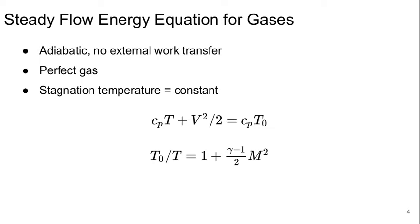So if we start with the energy equation — steady flow for our perfect gases, considering things to be adiabatic with no external work transfer — then as hopefully you remember from aerospace engineering fundamentals, the stagnation pressure or temperature will be constant. We can write the energy equation in terms of temperature as C_P T plus V squared over 2 equals C_P T naught, where T naught is our stagnation temperature. Or we can rearrange this equation and write it in terms of Mach number: T naught over T equals 1 plus (gamma minus 1) over 2 times the Mach number squared, gamma being the ratio of specific heats.